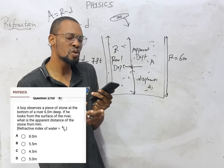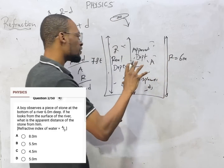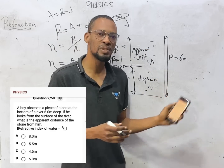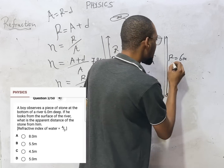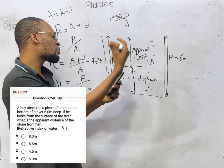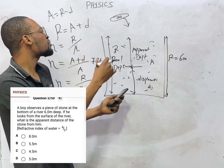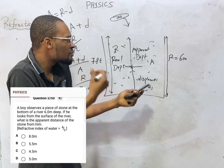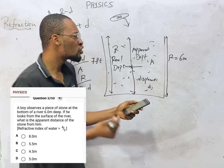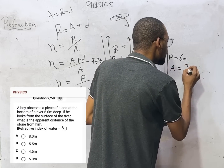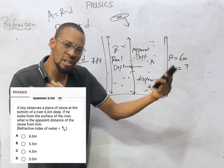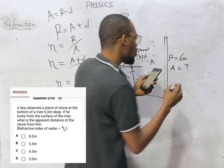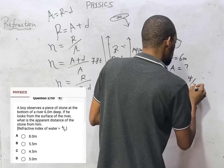If he looks from the surface of the river, what is the apparent distance of the stone from him? The depth that we've measured is six meters. As the boy is observing from the surface, the depth will not appear as deep as it actually is — it will look shallower. The apparent depth is usually smaller than the real depth. We are also told that the refractive index of the water is four over three.